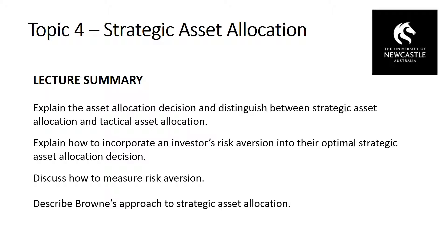Each asset class performs well under one of four basic economic conditions: periods of prosperity are good for stocks and bonds; periods of recession are good for cash; periods of deflation are good for both bonds and cash; and periods of inflation are good for gold. By diversifying across these four asset classes, the approach significantly dampens volatility across the cycle, with investors earning an expected return of generally about 3 to 4% above inflation at a very low level of risk. This is a long-term buy-and-hold strategic approach, and Brown's framework is one interesting case study worth reading further. Thank you for listening to topic four on strategic asset allocation.